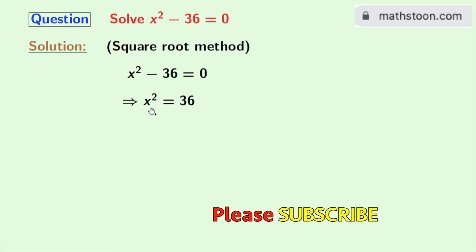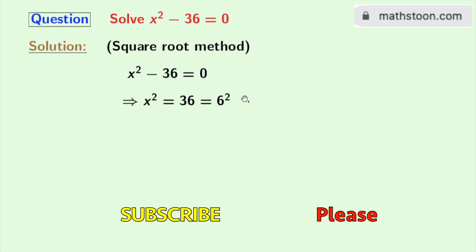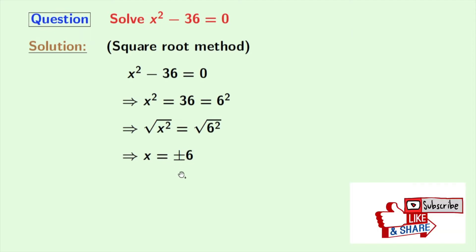Now we all know that 36 is 6 square, so we will write it as 6 square. Now if we take square roots on both sides, we get square root of x square is equal to square root of 6 square. Taking square roots, we get x is equal to plus minus 6.